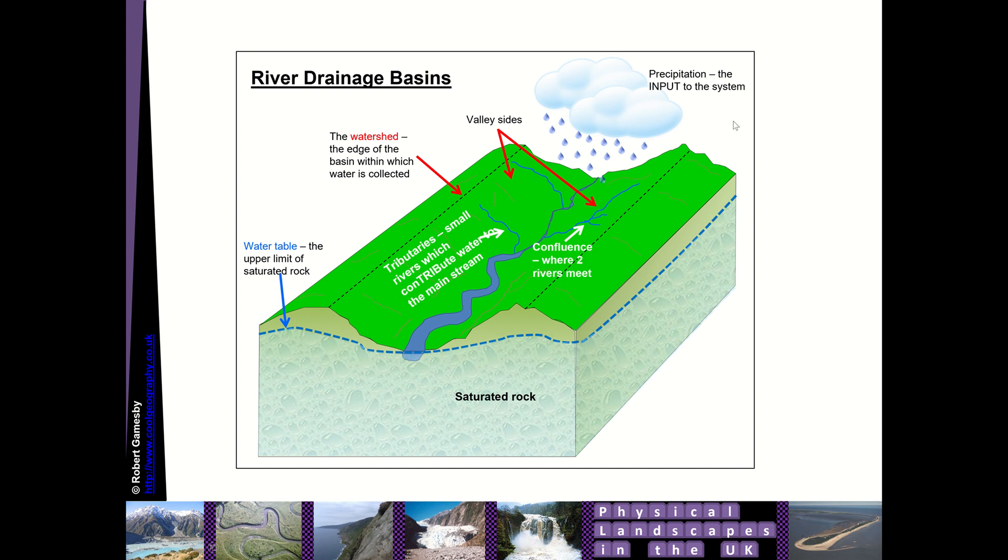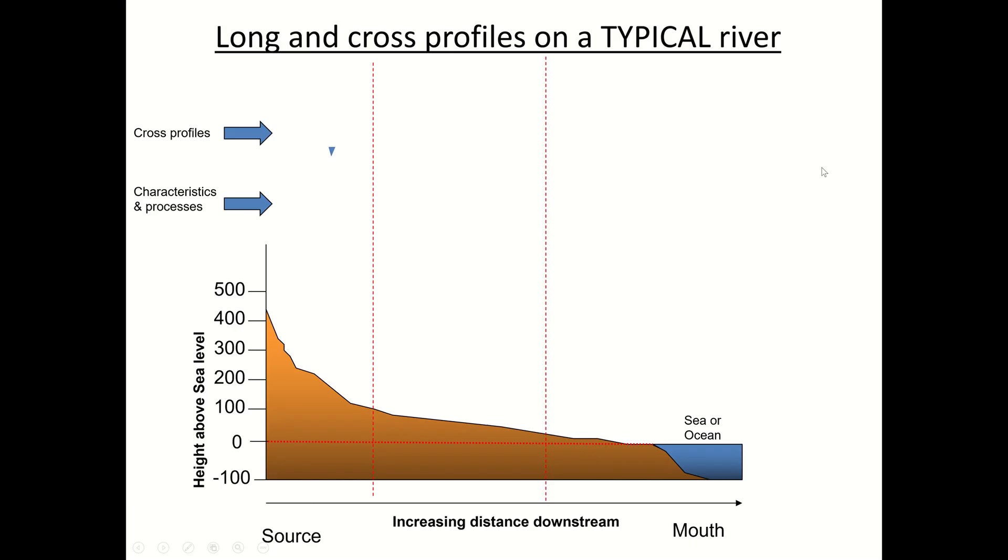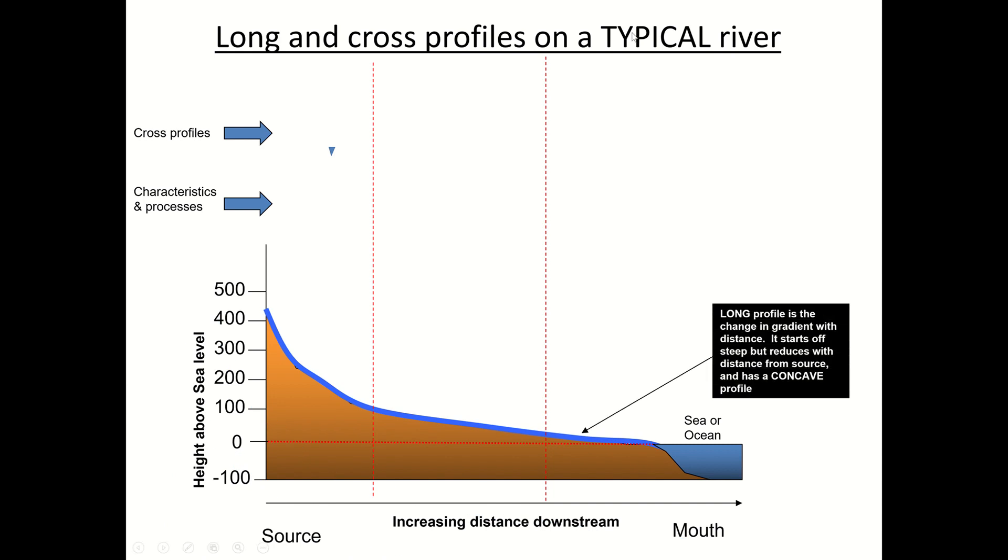As we move downstream along a river, if we started up in the mountain up here and worked our way all the way down that profile there until we reached the sea and followed the journey of a river, we would be following the long profile of the river. So the long profile is just the changing gradient as we move along the river. It starts off really steep and then gets gradually more and more gentle until we reach the sea. It generally tends to have a concave profile.